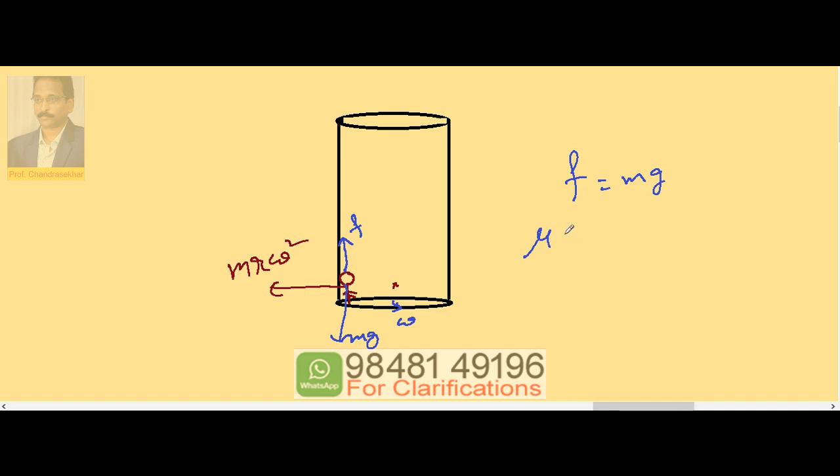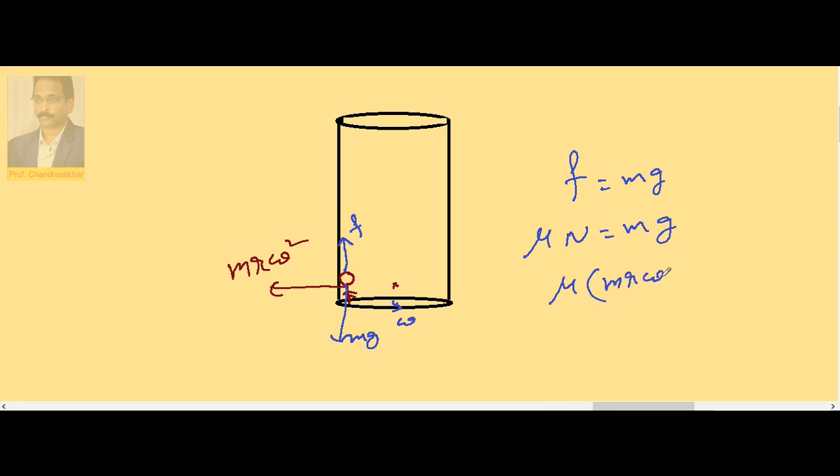We know that F is equal to mu into normal reaction. When the body is pressed against the wall, normal reaction is the pressing force. Here pressing force is M R omega square. So this is equal to M G.